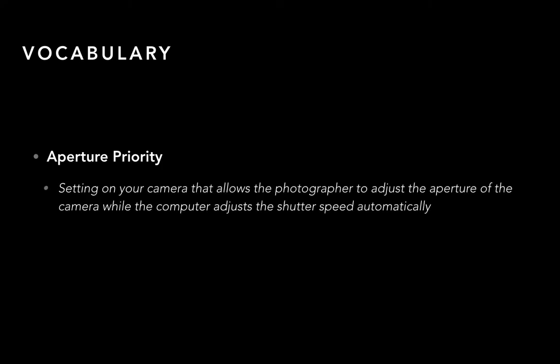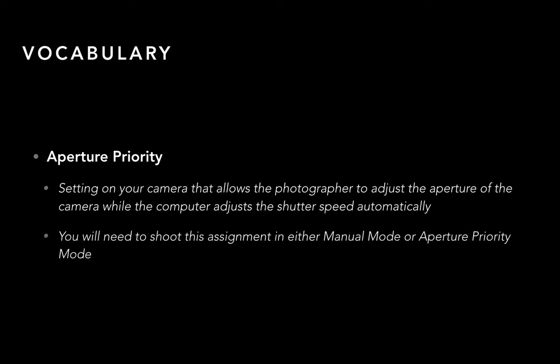Aperture priority — again you should remember from the DSLR quiz — is simply a setting on your camera that will allow you as a photographer to adjust just the aperture. The camera will adjust everything else for you. I'd highly recommend for this shooting assignment that you focus on using aperture priority. If you're interested in using full manual mode, we can talk about that at a later time. I would highly recommend shooting in aperture priority — it'll make your life easier.